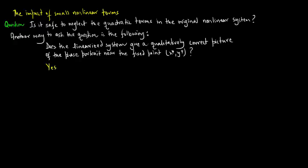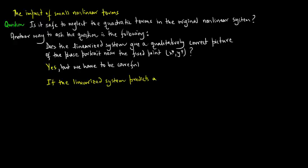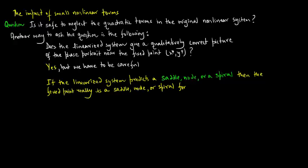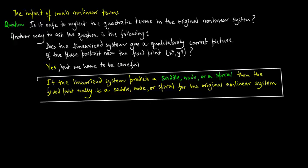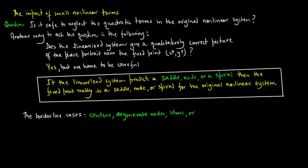The short answer is yes, but we have to be very careful. If the linearized system predicts a saddle, a node, or a spiral, then the fixed point really is a saddle, a node, or a spiral for the original nonlinear system. The borderline cases — i.e., centers, degenerate nodes, stars, or non-isolated fixed points — have to be treated much more carefully.